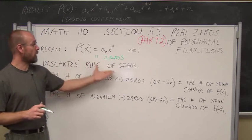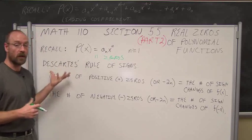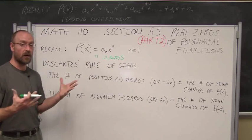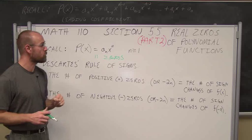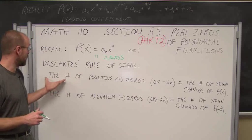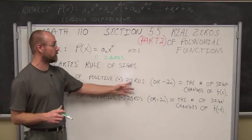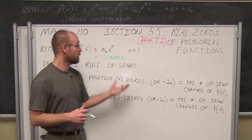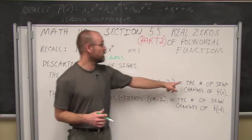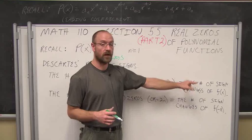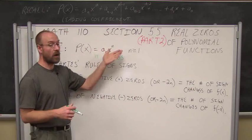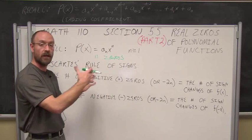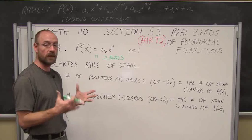We have a rule that was developed by René Descartes, called Descartes' Rule of Signs. You may recognize the name — our Cartesian coordinate system is also named after him. What he essentially theorized was that the number of positive real zeros, or an even integer less than that, is the number of sign changes of f(x). So if we have a polynomial where the first coefficient is positive and the next one is negative, that's a change in signs.